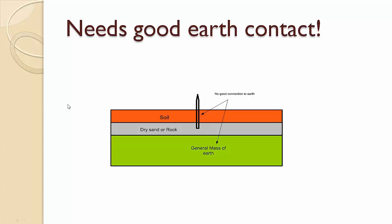For example, you can see here this is the general mass of Earth, and this is the soil where we are grounding the Earth electrode. But you can see that we don't get a good Earth here. Because in this area, for example, it will be like this in desert areas, because we have dry sand or rock.